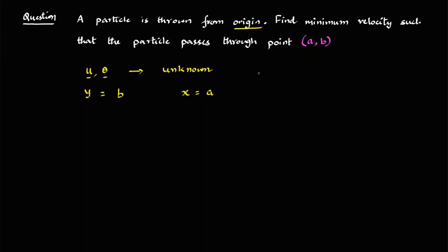We know the equation of the trajectory as Y is equal to X tan theta minus G X square upon 2U square cos square theta. Now here at certain point A comma B, Y and X are known to you.